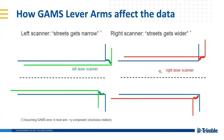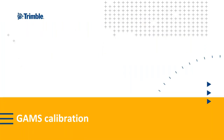To put it more simply: with the left scanner, the street appears narrower and rotated clockwise; with the right scanner, the street appears wider and also rotated clockwise — what's ahead is shifted forward and what's behind is shifted backwards. This is good to keep in mind. If you see something like this in your data, you should play with your GAMS settings, and if you see this phenomenon, you may need to do a GAMS calibration.